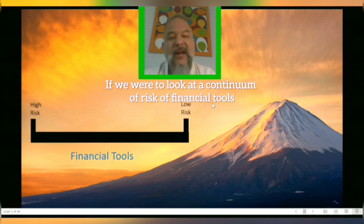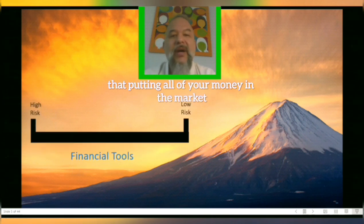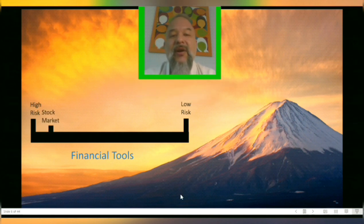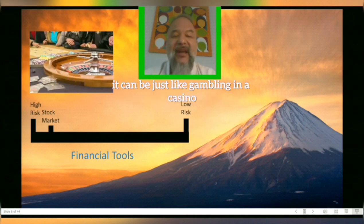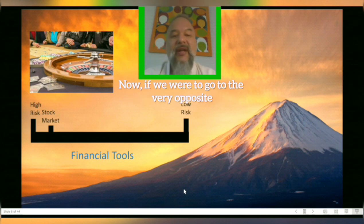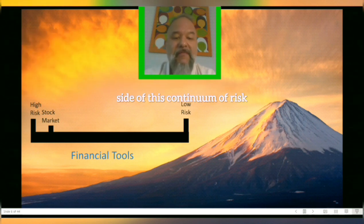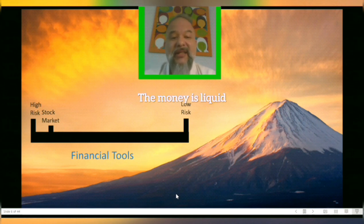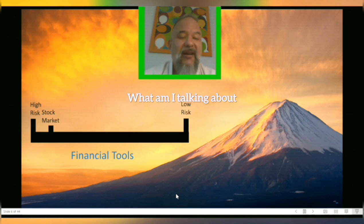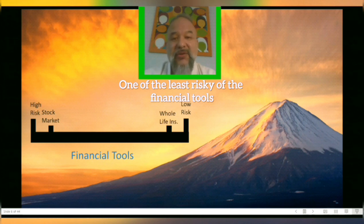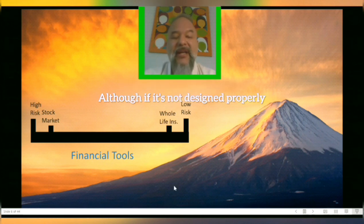If we look at a continuum of risk of financial tools, putting all of your money in the market is at the high end. If you don't know what you're doing, it can be just like gambling in a casino — not a very prudent way to plan for your financial future. At the very opposite end of this continuum are the least risky financial tools — something tried and true for about 200 years that, unlike the stock market, has guarantees, is liquid, and protects your principal. That's whole life insurance, one of the least risky financial tools, though if not designed properly, it can also be one of the most expensive.